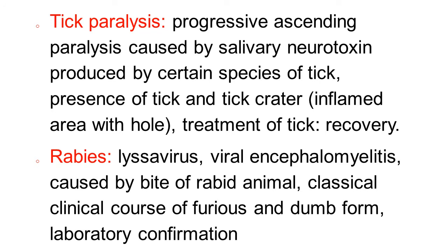Another differential diagnosis of botulism is tick paralysis. There is progressive ascending paralysis caused by salivary neurotoxin of certain species of tick. Diagnosis is by the presence of tick on the animal or a tick crater — an inflamed area with a hole where the tick is attached.